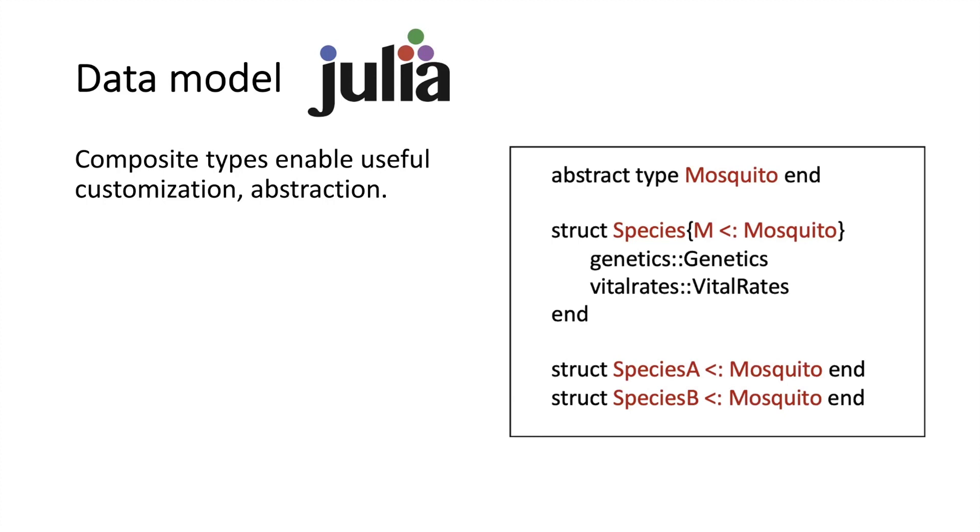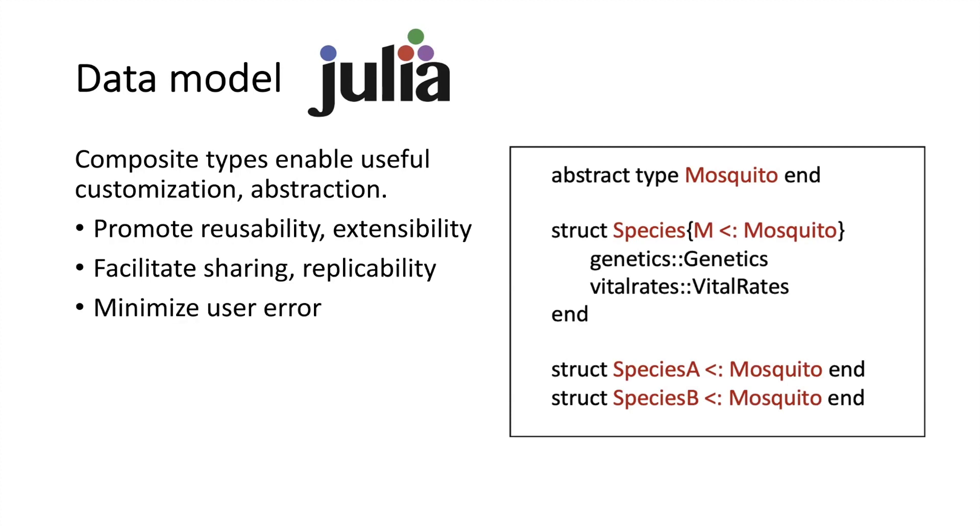For each species, I define genetic characteristics and vital rates, so that's information like mortality and reproductive characteristics. The data model allows me to reuse and extend my existing structure when necessary. It also promotes information sharing and experiment replication. Frankly, it also just minimizes potential user error.